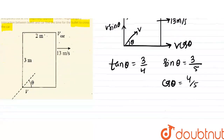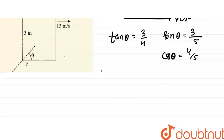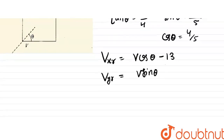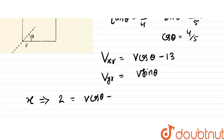If the bullet has to cross the car and cover the 2 meter distance, then we use the relative velocity. The X-axis relative velocity of the car gives us: V cos theta minus 13 covers the 2 meter distance. So the X direction equation is: 2 equals V cos theta minus 13, multiplied by time.